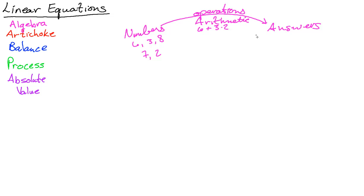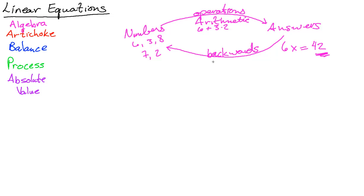When you start out with the answers and have to go backwards — such as when we say 6x equals 42, we're actually starting out with the end result and we have to undo what was there. This is where we get the word algebra — it's an Arabic word meaning to go back to the original, or to find out what once was there, what was missing.